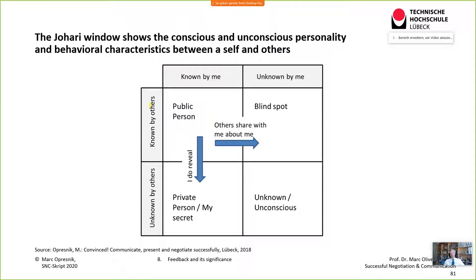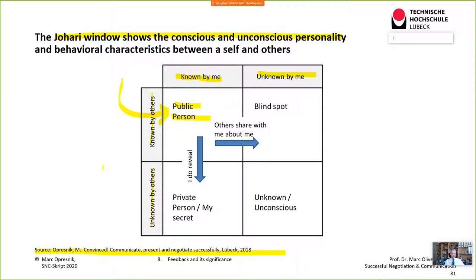A very successful model is the Johari Window, which shows the conscious and unconscious personality and behavioral elements between ourselves and others. It has four quadrants: known by others/known by me — the 'public person'; known by me but not by others; known by others but not by me; and unknown by both. The most interesting area is what's known by others but not by me — we call this the 'blind spot.'